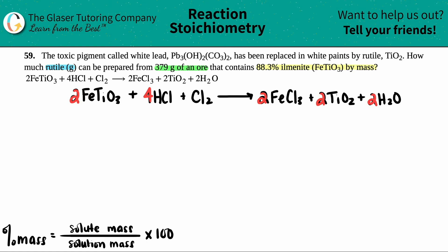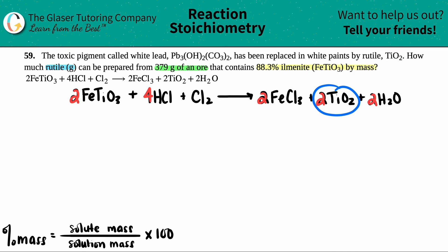I like to write out under my balanced equation what I have and what they want us to know. The first sentence is useful only for telling us that rutile is TiO2. So we're asking for how many grams of TiO2, which is here in my balanced equation. We want to find those grams. They told us we have 379 grams of an ore that contains 88.3% ilmenite, which is FeTiO3, by mass.